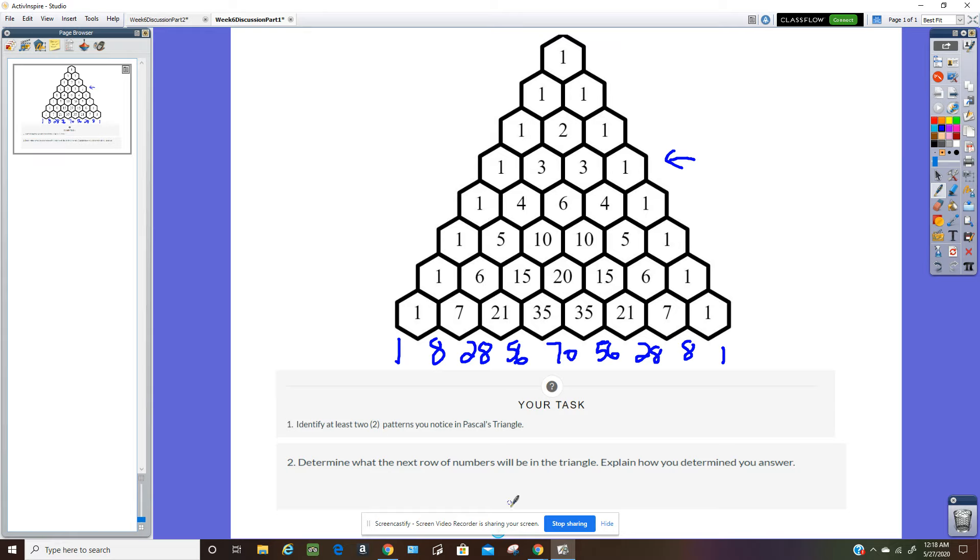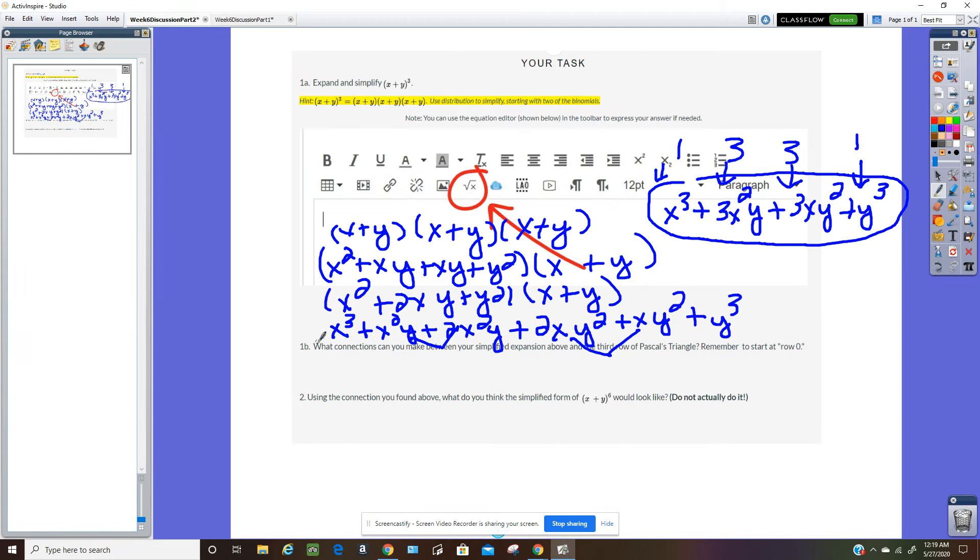Going back here to the discussion item. You would have 1, 6, 15, 20. And then 15, 6, and 1.